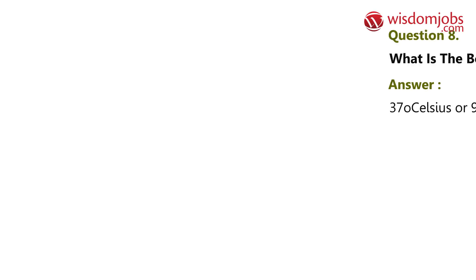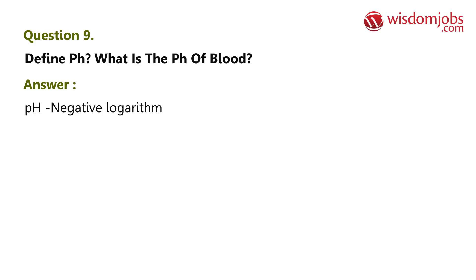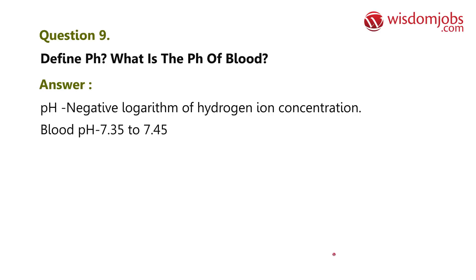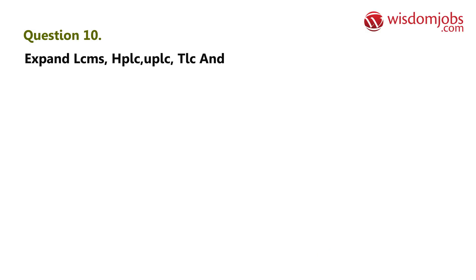Question 9: Define pH. What is the pH of blood? Answer: pH is the negative logarithm of hydrogen ion concentration. Blood pH is 7.35 to 7.45 (approximately 7.4). Question 10: Expand LCMS, HPLC, UPLC, TLC, and GC.